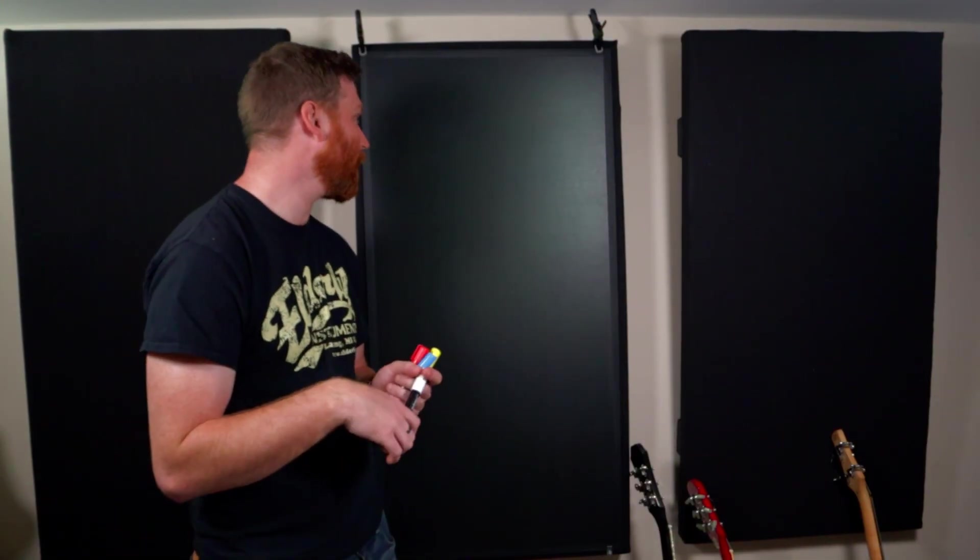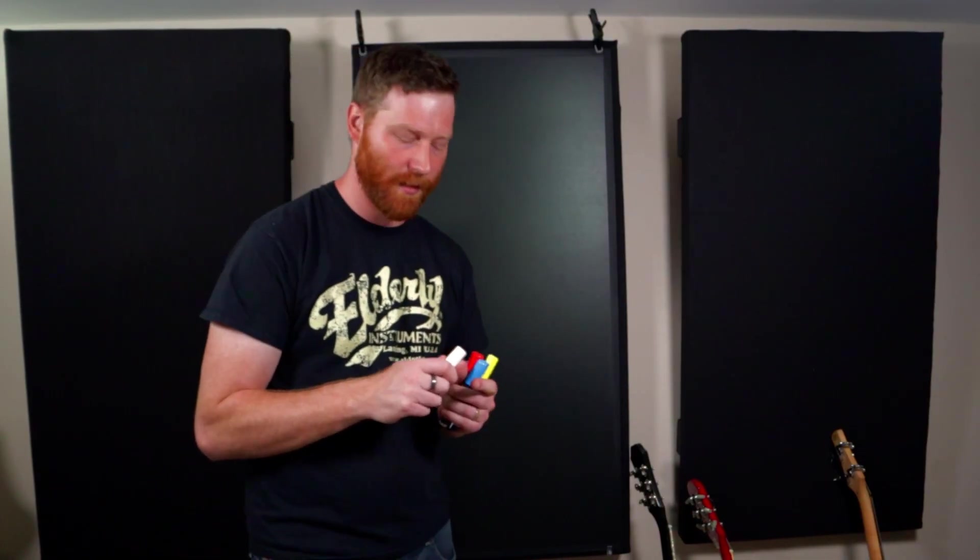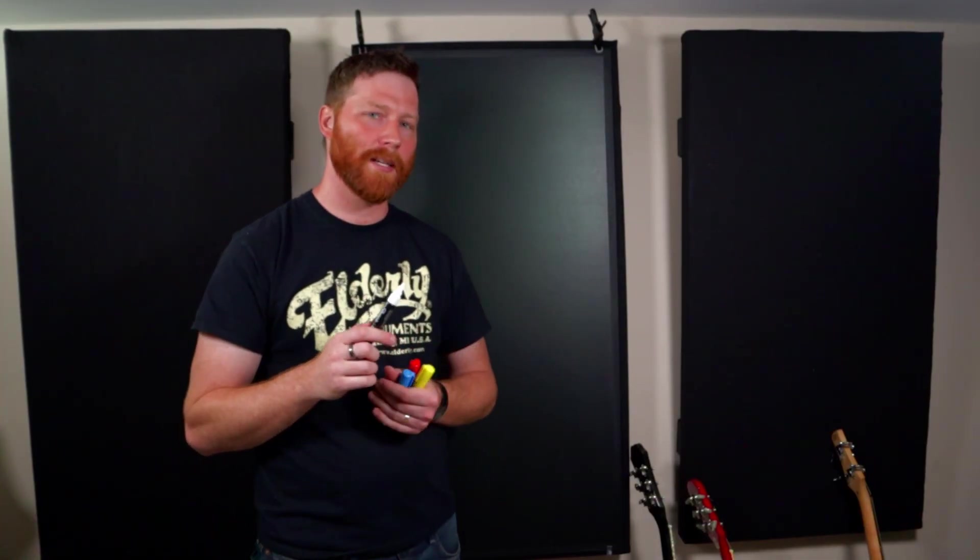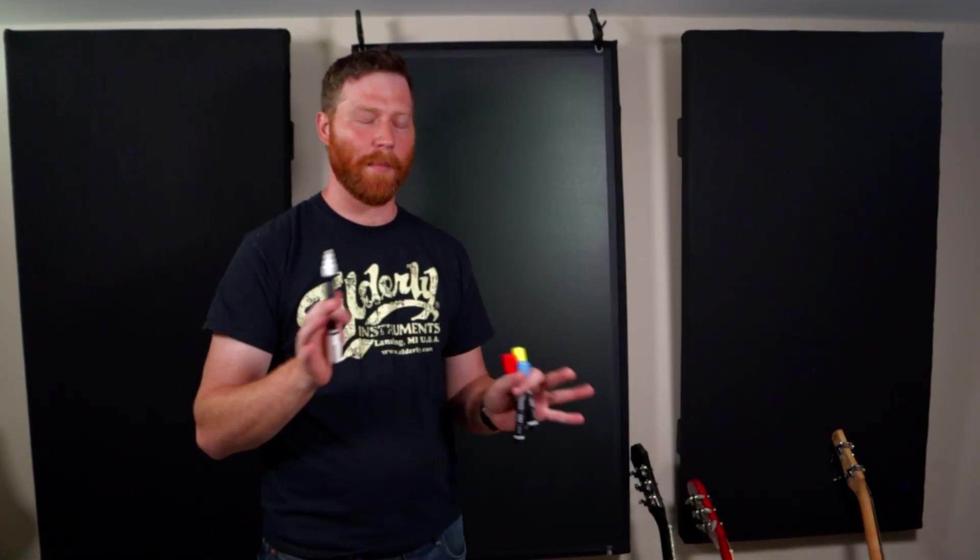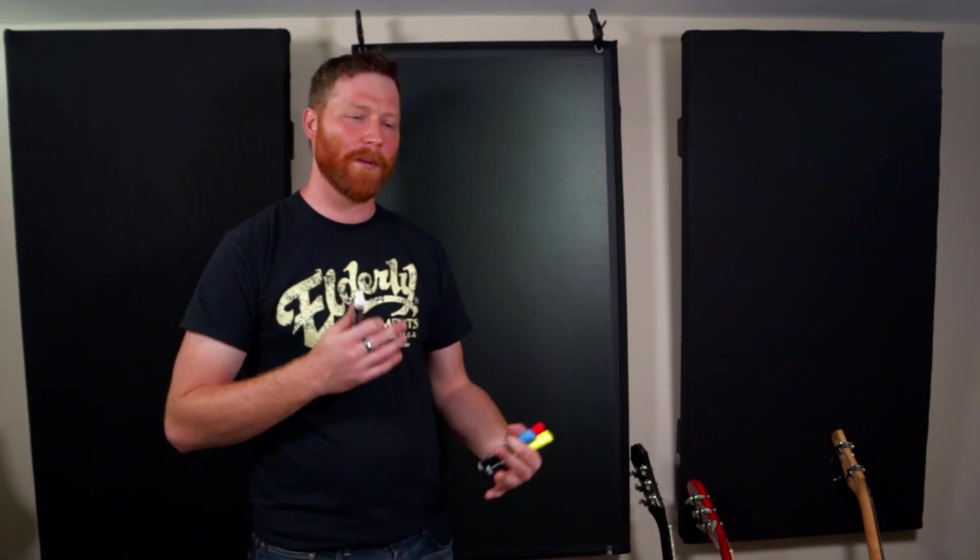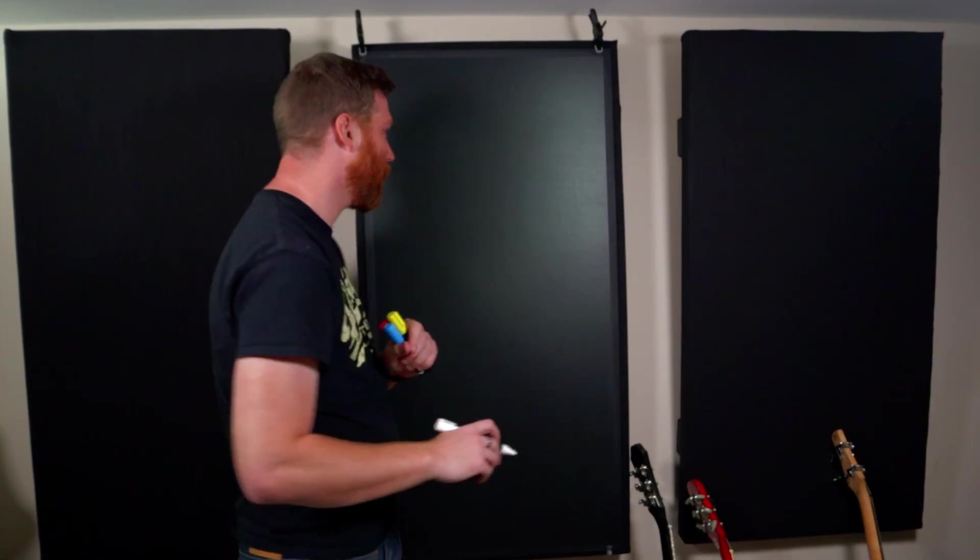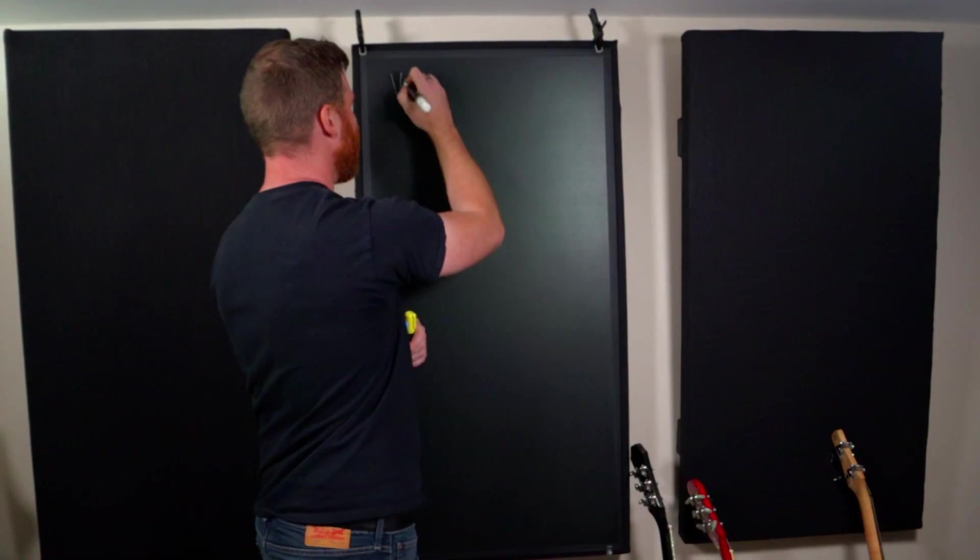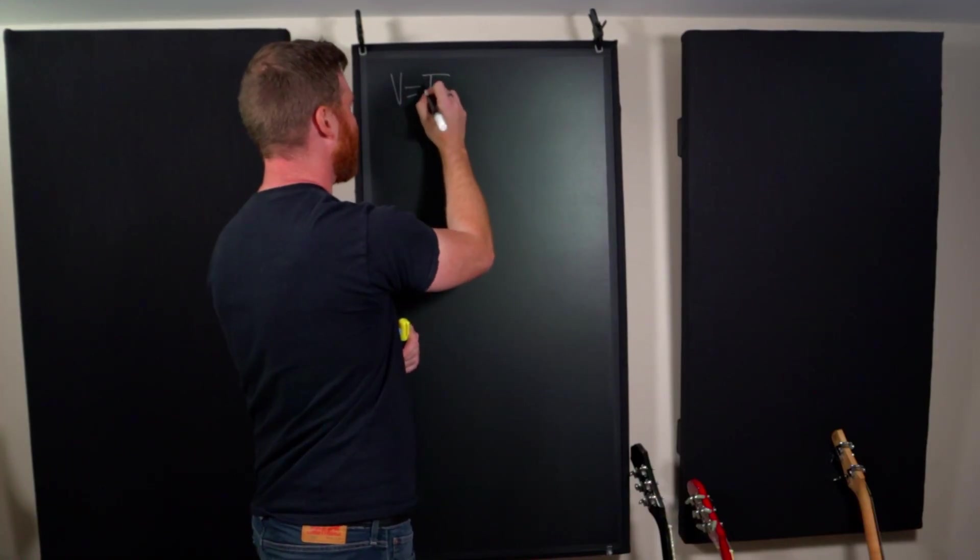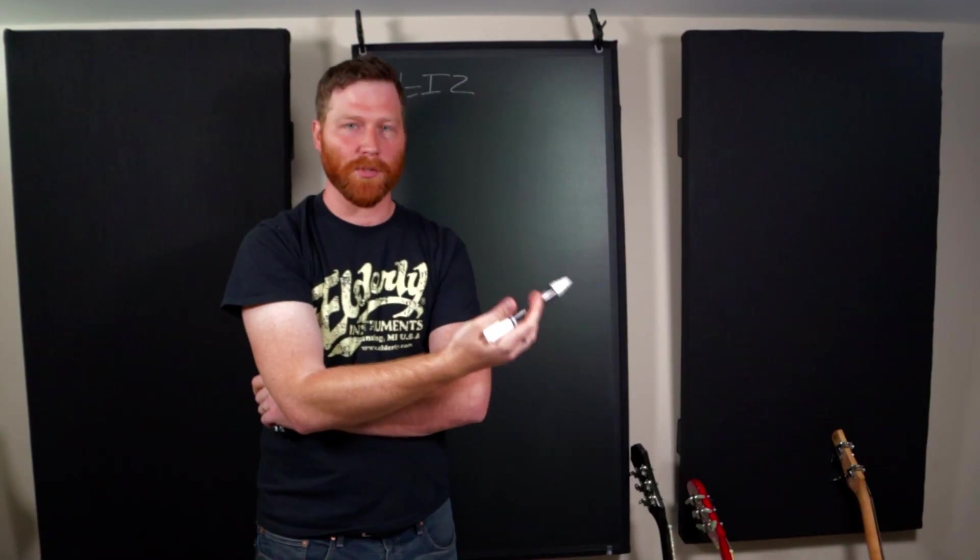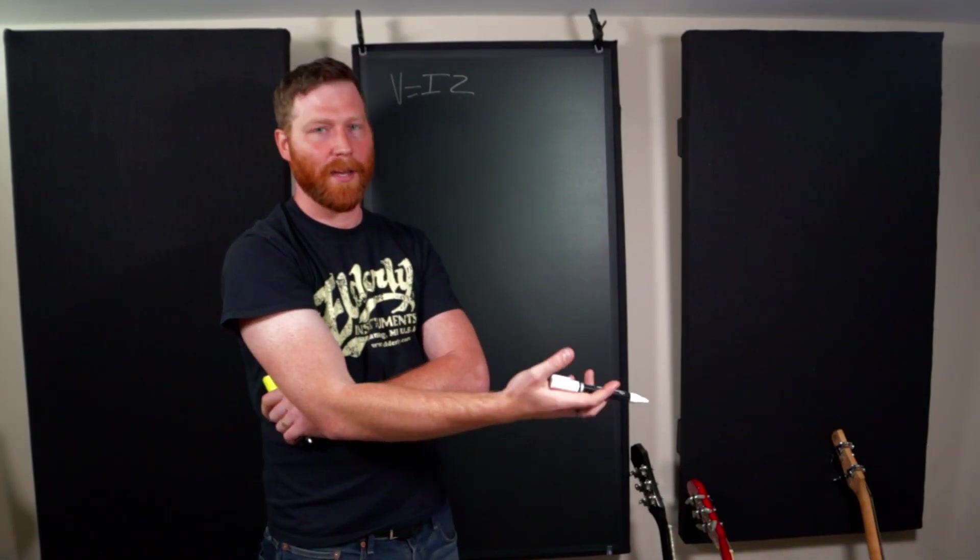We're going to use some chalk markers here and I really only have one equation I'm going to write down. If you look up impedance, it gets mathematically crazy. But the way I've come to understand it, I can explain it in a more conceptual way rather than getting into the weeds. But we do need one equation. It's just classic Ohm's law. So voltage equals current times resistance, V equals IR.